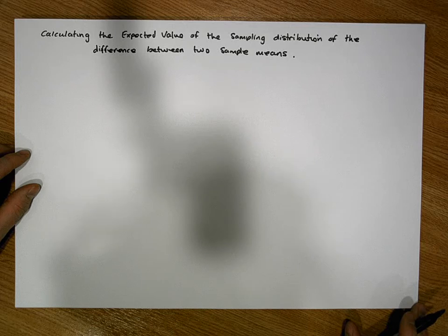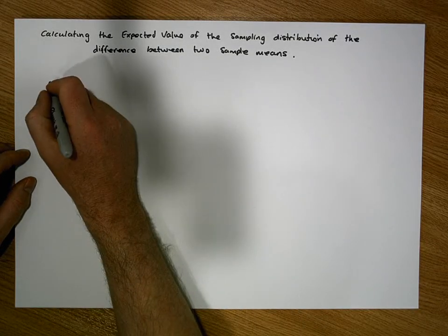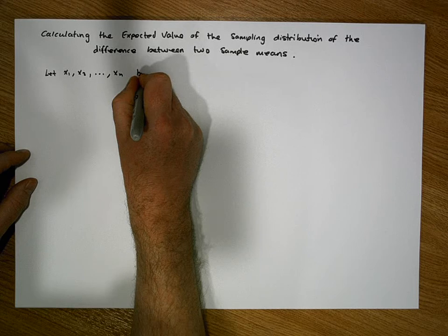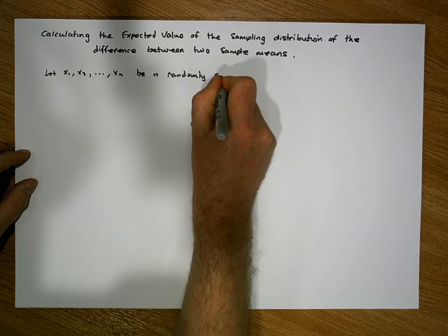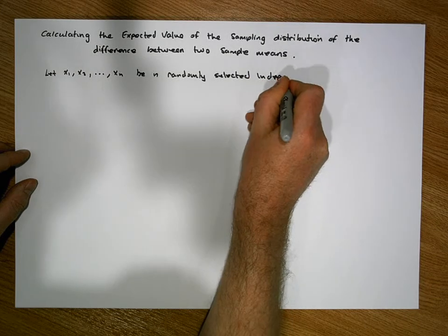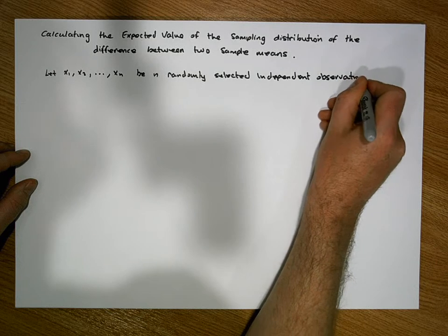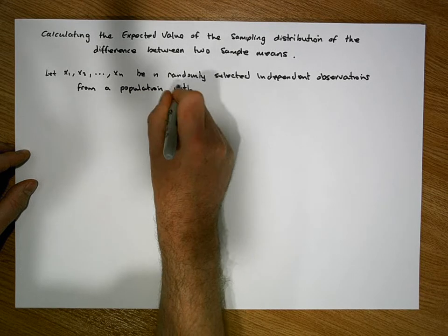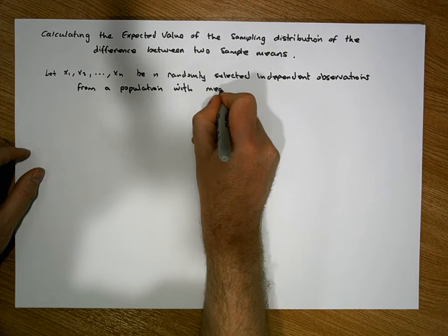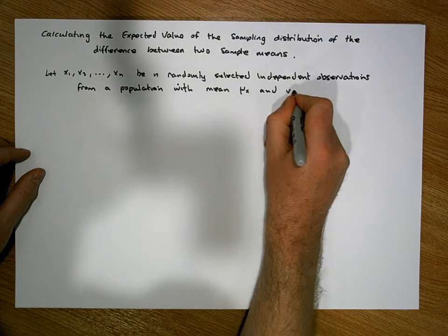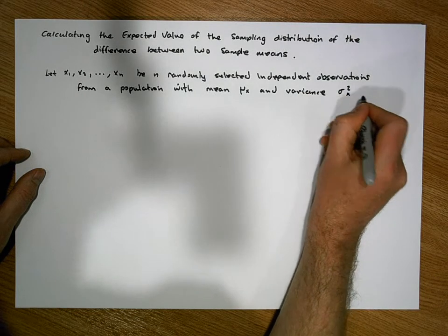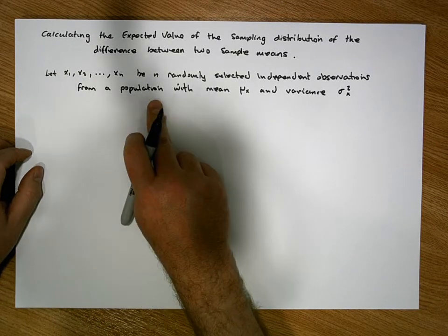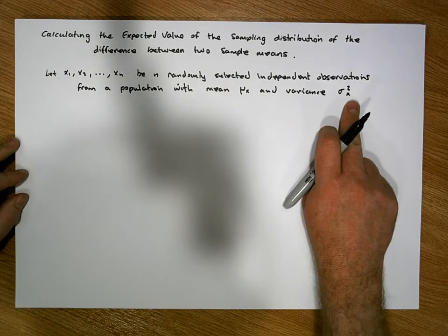Let's assume that we have two separate random variables x and y. Let x1, x2 through to xn be n randomly selected independent observations from a population with mean mu of x and variance sigma squared of x.